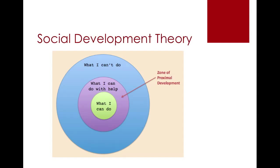The social development theory was proposed by Vygotsky and focuses on social interaction, a more knowledgeable other, as well as the zone of proximal development. Vygotsky felt that social interaction played a fundamental role in the acquisition of knowledge. He believed that learning occurred in the zone of proximal development, which is the difference between the learner's ability to do something independently versus doing that with collaboration from a more knowledgeable other.